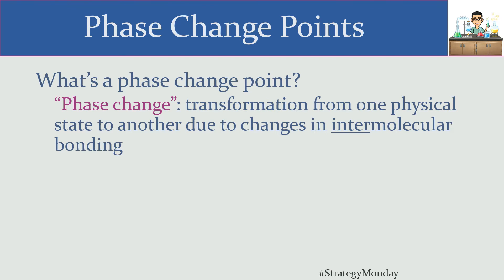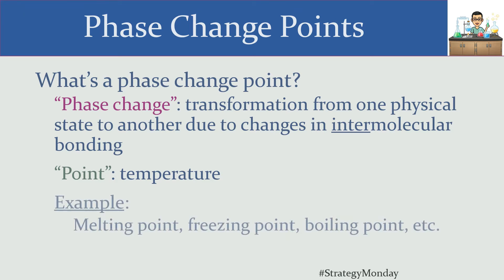When we talk about a point, what we're referring to is a temperature. Examples of phase change points are going to include things like the melting point, the freezing point, the boiling point, and so on and so forth. So phase change refers to whatever that phase change may be, and point refers to a certain temperature.